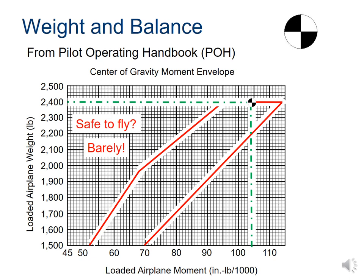For our example, we had about 2,400 pounds and about 105,000 inch-pounds for moment. Notice the axis for moment is expressed in per-thousand inch-pounds, so make sure you divide through by 1,000, or take note of that for the specific plane or graph you're working with. We will look at the intersection of these two values, and if that point is within the red line or envelope, the plane is safe to fly. For this example, the point falls right on the line, so it's safe to fly, but barely. If you are first learning to fly, you would want to fall right in the middle of the envelope for maximum stability and safety rather than that close to the edge.